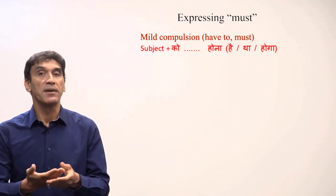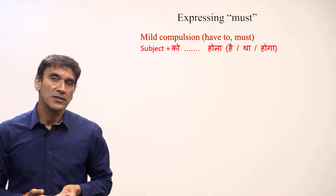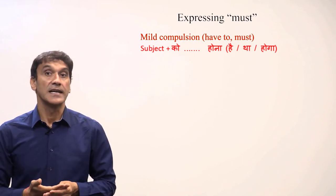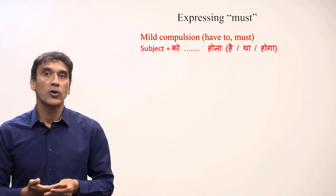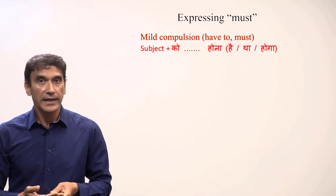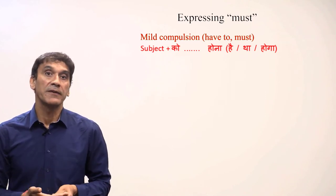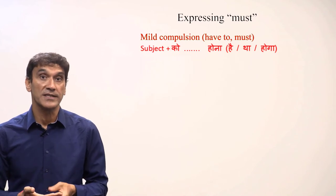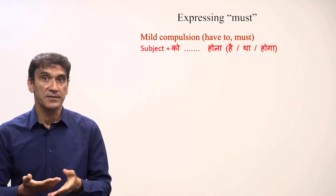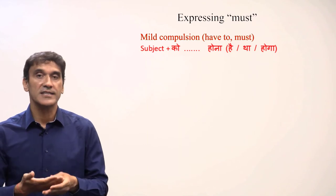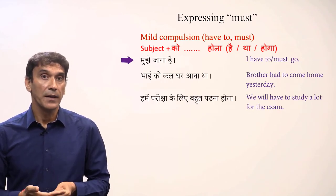Apart from chahiye that expresses 'should' or 'should have', there are more compulsion constructions in Hindi. There is a mild compulsion construction which can be translated as 'have to' or 'must' — it expresses a mild internal obligation or compulsion. In this construction the subject takes the postposition ko, and the helping verb hona is in its simple form such as hai, tha, or hoga, depending on the tense — present, past, or future. For example: mujhe jana hai — I have to go, I must go.